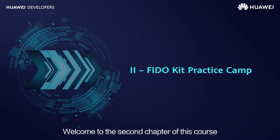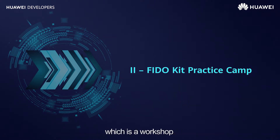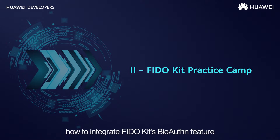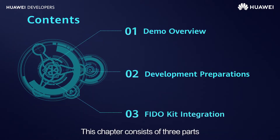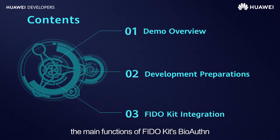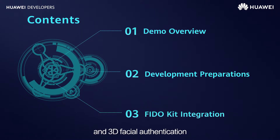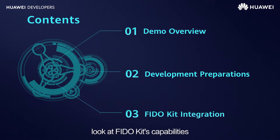Hi everyone, welcome to the second chapter of this course, which is a workshop where you will learn how to integrate FiddleKit's BioAuthn feature. This chapter consists of three parts. The first part is a demo of main functions of FiddleKit's BioAuthn, including fingerprint authentication and 3D facial authentication. This will give you a hands-on look at FiddleKit's capabilities.